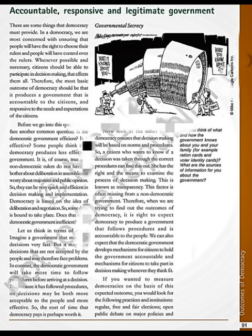When we try to find out the outcomes of democracy, it is right to expect democracy to produce a government that follows procedures. Our expectation is that government should be accountable, follow all proper procedures in law-making, and that proper consultation and discussion should take place so that the best decision comes out — decisions should not be taken in haste. If we adopt the democratic system, then we have certain expectations. We can also expect that democratic government develops systems for citizens to hold the government accountable and mechanisms for citizens to take part in decision making whenever they think fit, that is through elections.